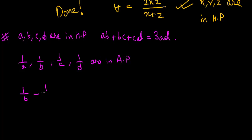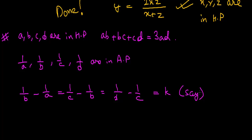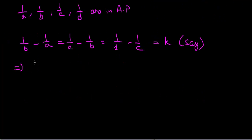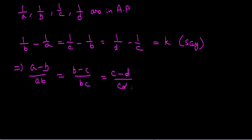Applying the AP common difference: 1/b − 1/a equals 1/c − 1/b equals 1/d − 1/c equals constant k. Simplifying, these become (a − b)/ab, (b − c)/bc, and (c − d)/cd respectively, each equal to 1/k.